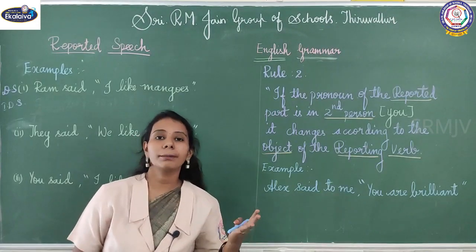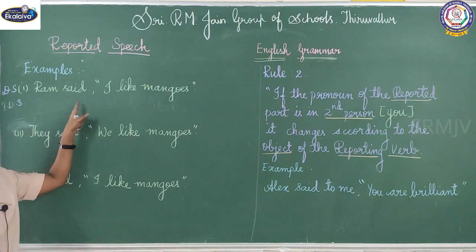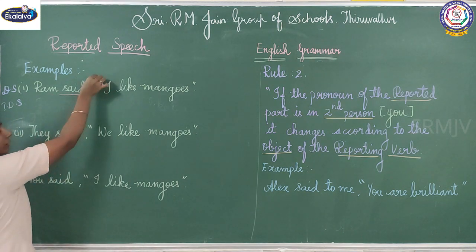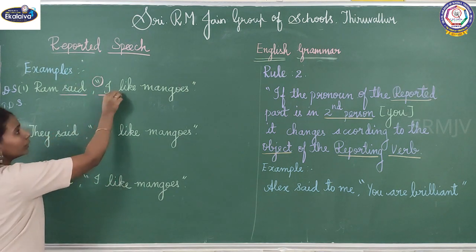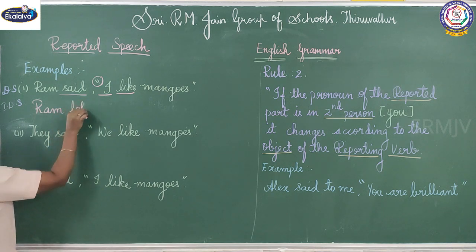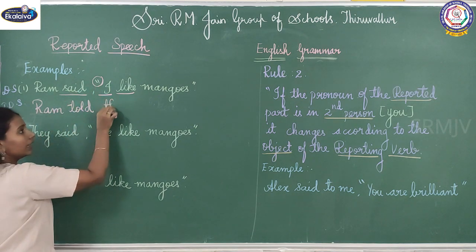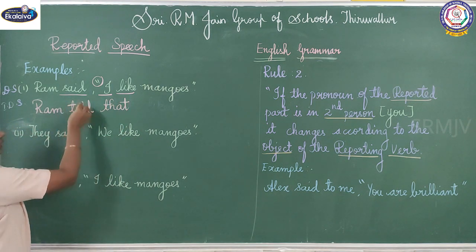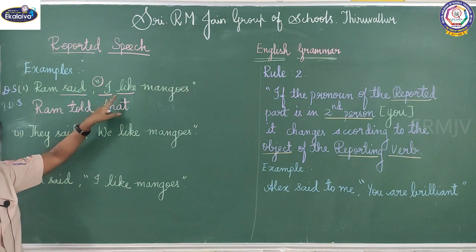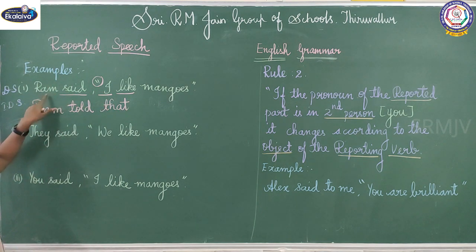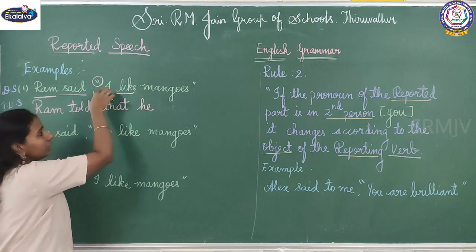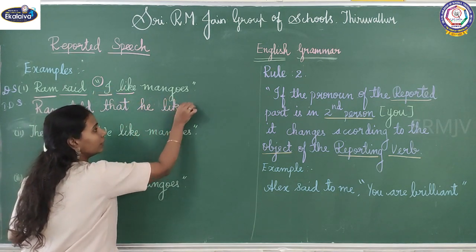Let us understand rule number one better using some more examples. Ram said, 'I like mangoes.' So let us form the conversion. Ram, instead of said, we write told. Instead of double quotes, we write the conjunction 'that'. Ram told that — and the first rule says when the pronoun is in the first person, it changes according to the subject of the reporting part. The subject is Ram, who is a boy, so the pronoun is 'he'. I is changed to he — Ram told that he liked mangoes.